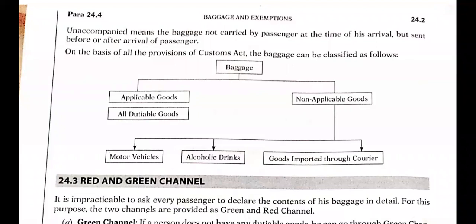Accompanied baggage means baggage not carried by the passenger at the time of arrival but sent before or after the arrival of the passenger. For example, a person may come by airplane and the baggage comes later by ship in a container. Such baggage, where it is imported before or after the passenger's arrival in India, is called accompanied baggage.